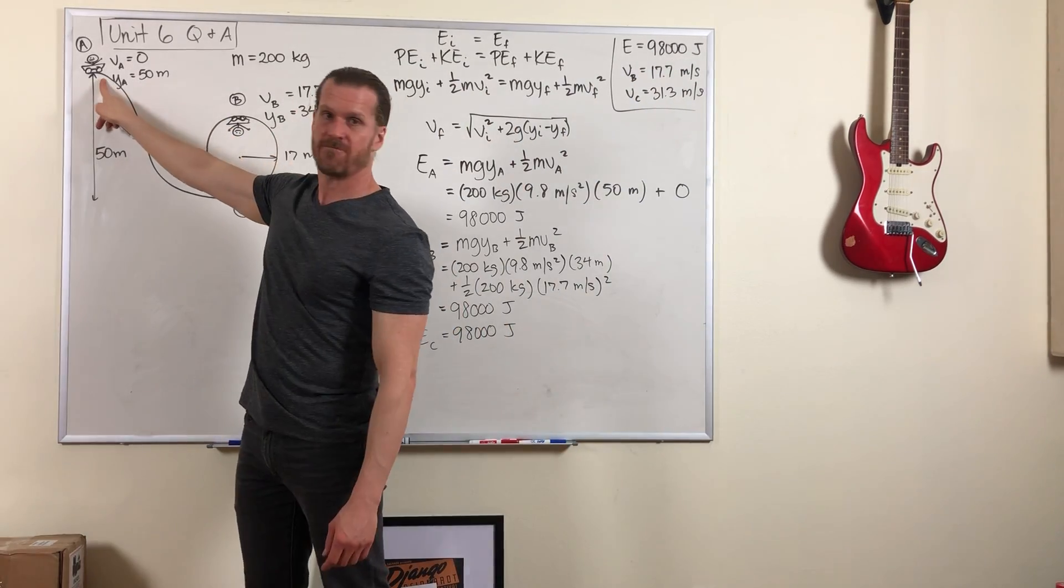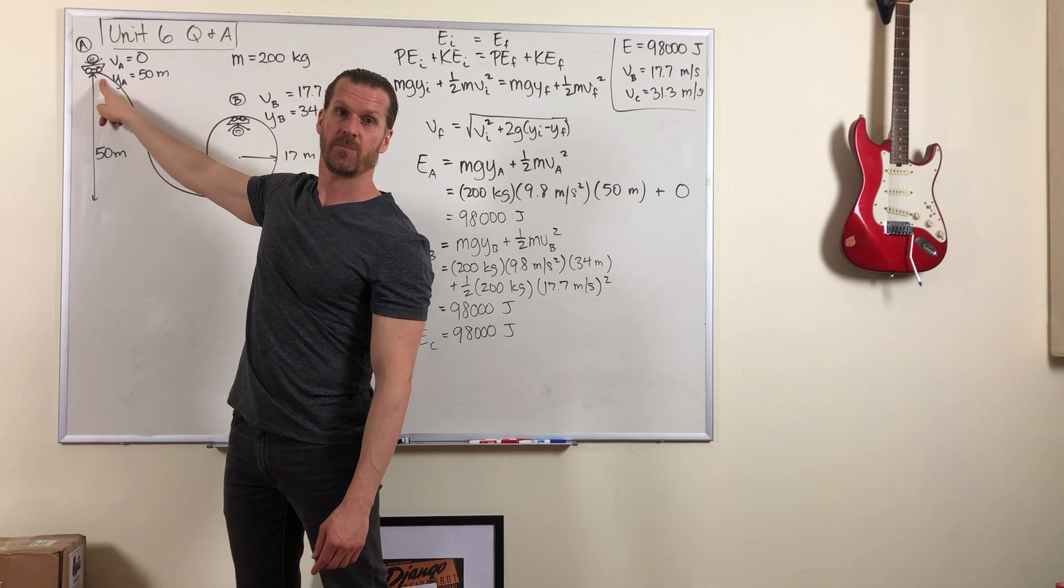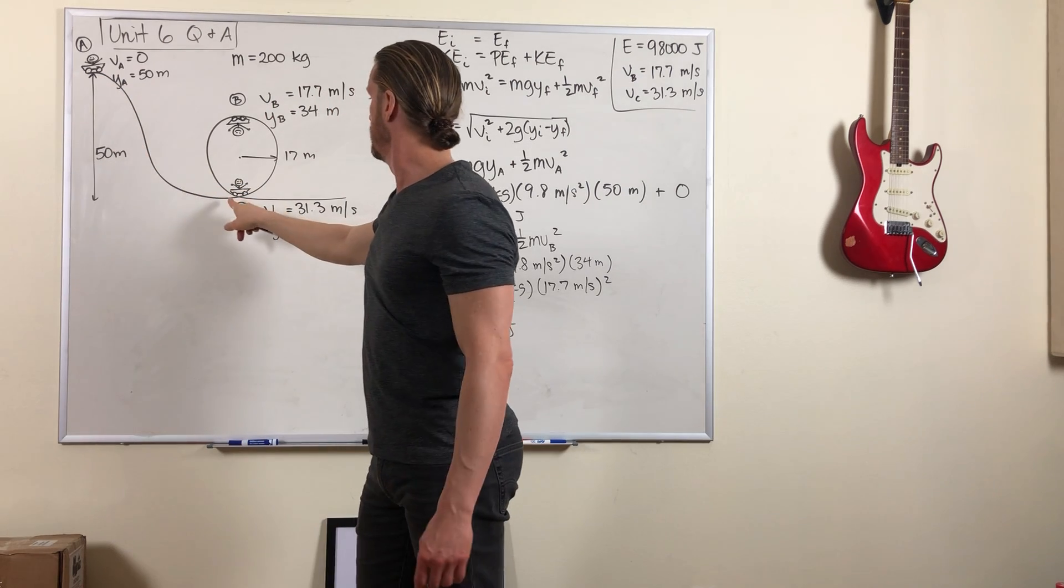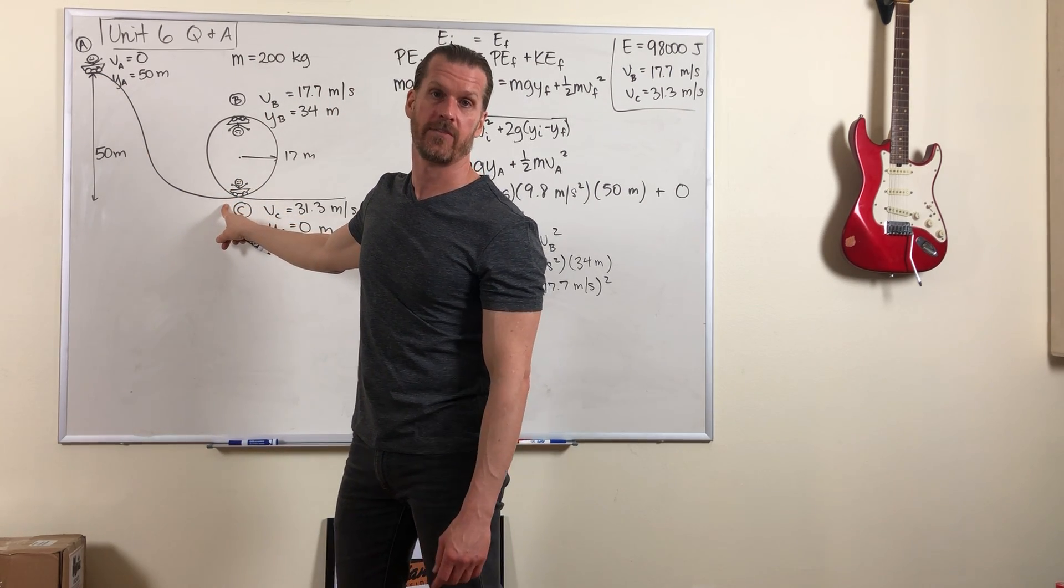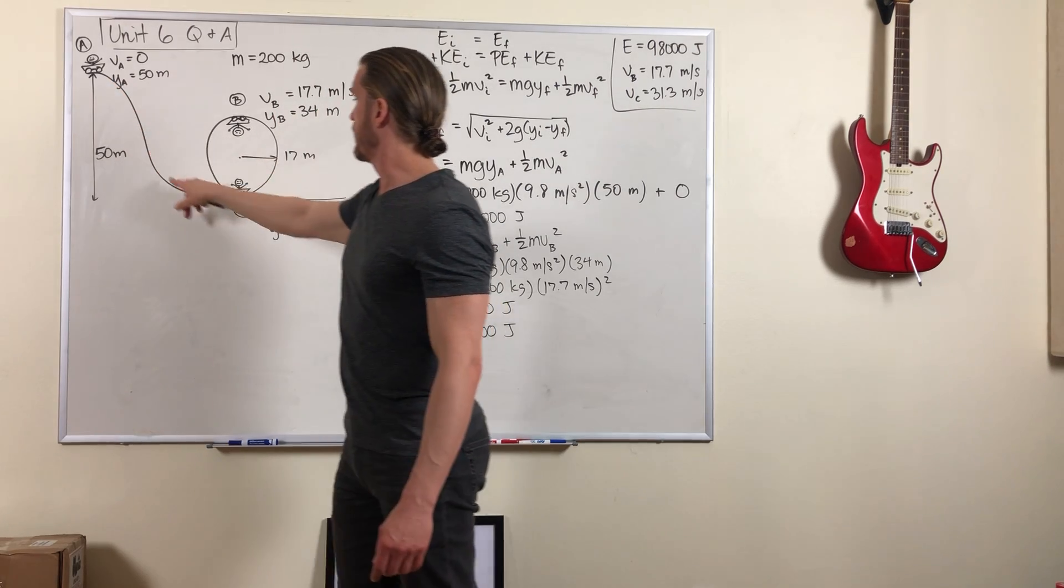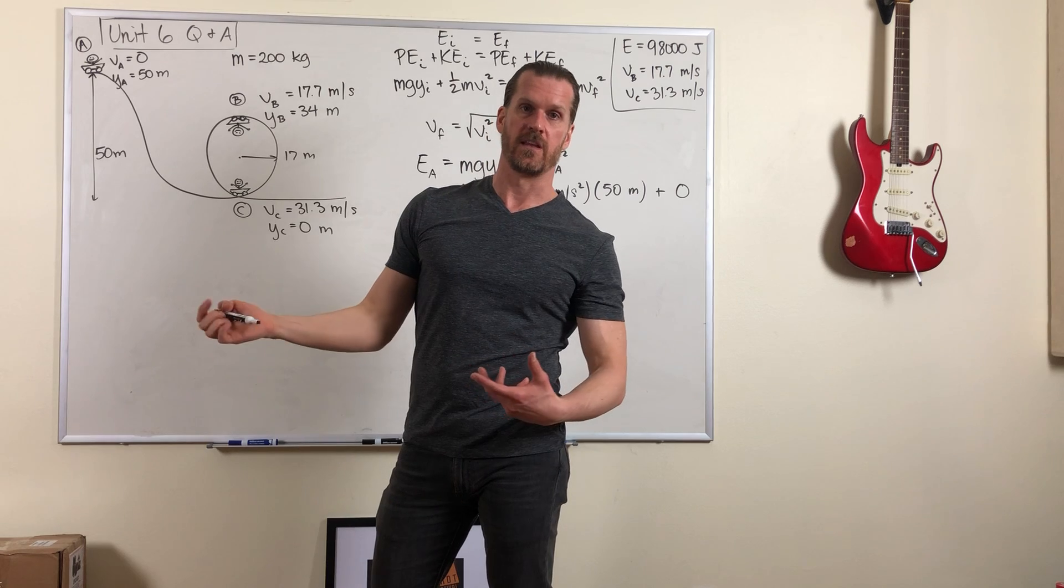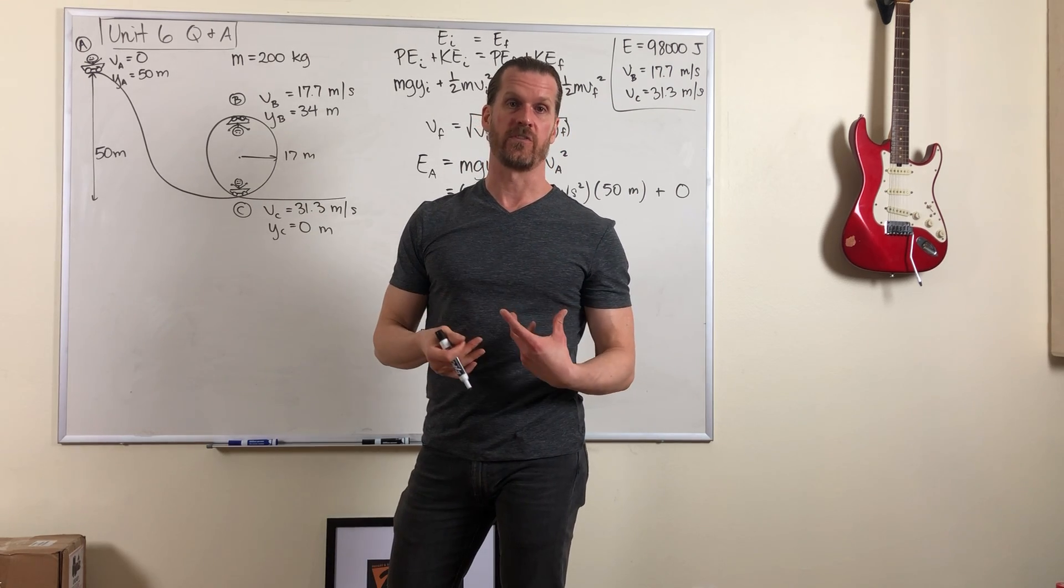At point A, all of that energy, all 98,000 joules is in potential energy. At point C, all 98,000 joules is kinetic energy. And at other points in between, some of it is potential, some of it is kinetic, but the total amount is always constant.